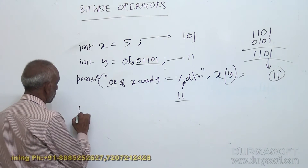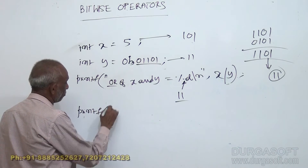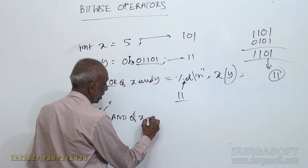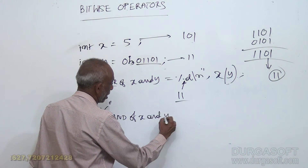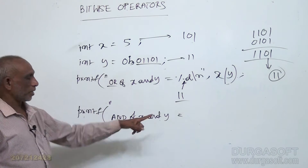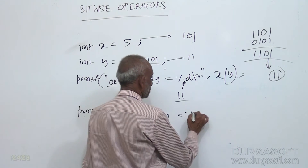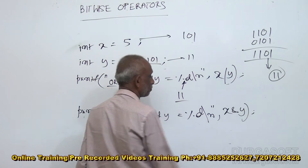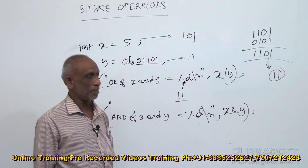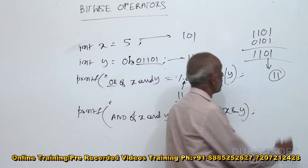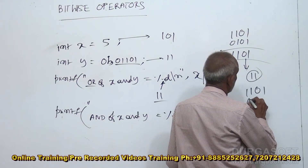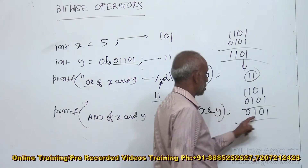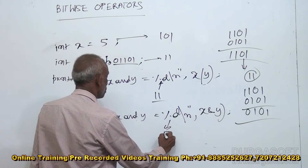Next, for the AND operation: printf("AND of x and y = %d", x & y). Here x is 1101 and y is 0101. AND-ing gives 0101, which equals 5 in decimal. So here you get 5 on the display.